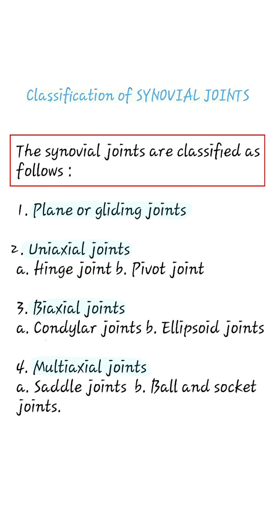Biaxial joints — which includes condylar joints and ellipsoid joints. Multiaxial joints — which includes saddle joints and ball and socket joints.